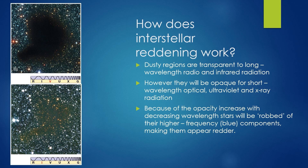How does interstellar reddening work? Dusty regions are transparent to long wavelength radio and infrared radiation. However, they will be opaque for short wavelength optical, ultraviolet, and x-ray radiation. Because opacity increases with decreasing wavelength, stars will be robbed of their higher frequency or bluer components, making them appear redder than they actually are.